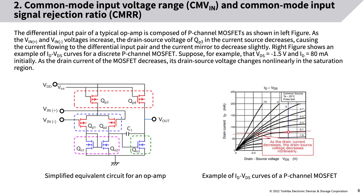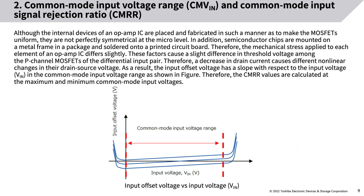The differential input pair of a typical op-amp is composed of P-channel MOSFETs. As VIN+ and VIN− voltages increase, the drain-source voltage of QP3 in the current source decreases, causing the current flowing to the differential input pair in the current mirror to decrease slightly. The right figure shows an example of ID-VDS curves for a discrete P-channel MOSFET. Suppose VDS equals −1.5V and ID equals 80mA initially; as drain current decreases, the drain-source voltage changes nonlinearly in the saturation region.